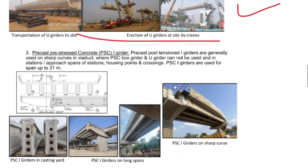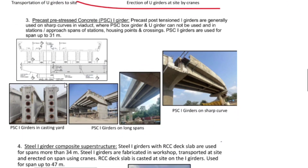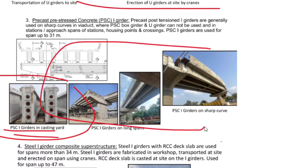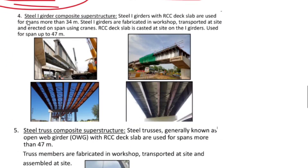Other girder types include PSC I-girders, which are also casted and then erected using cranes. Similarly, U-girders are casted and launched using cranes. Steel composite girders are another type used in certain span configurations.